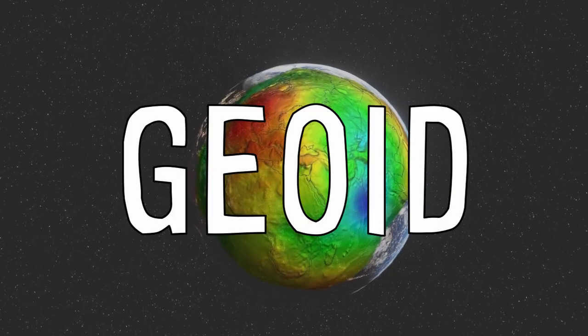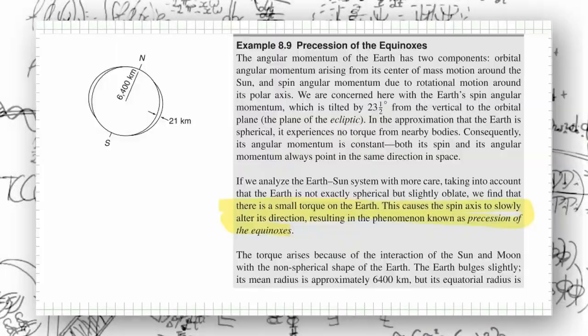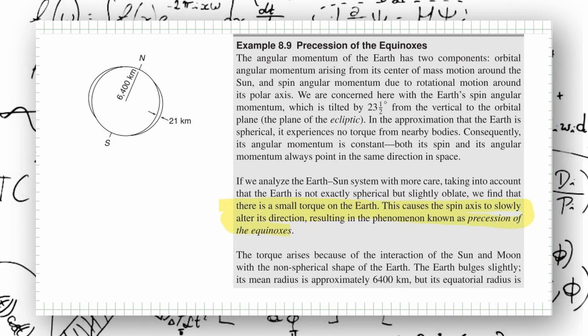Its true physical geometry is a geoid, and the Sun exerts a gyroscopic force, also known as a gyroscopic couple, which causes the Earth to precess about its axis of rotation.